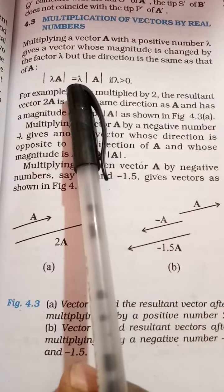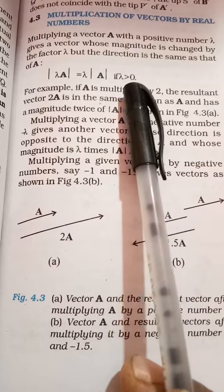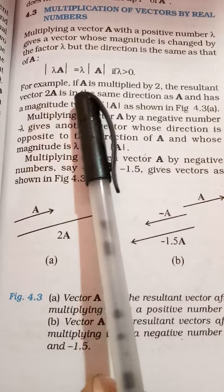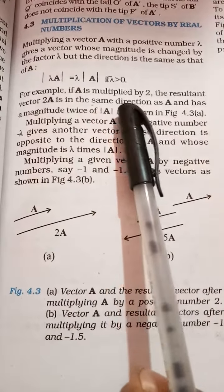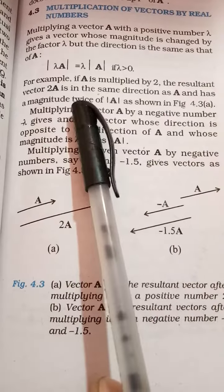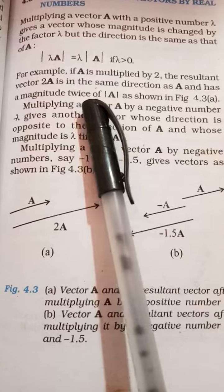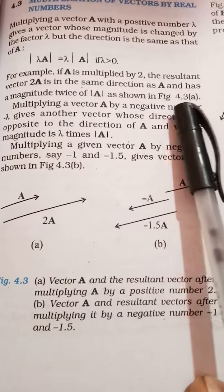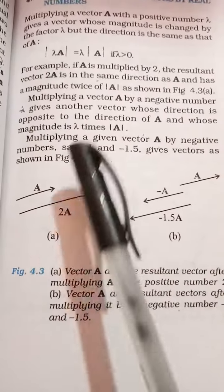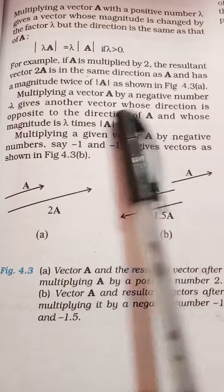Lambda equals lambda if lambda is greater than zero. For example, if A is multiplied by 2, the resultant vector 2A is in the same direction as A and has a magnitude twice that of A, as shown in figure 4.3(a). Multiplying a vector A by a negative number, minus lambda...